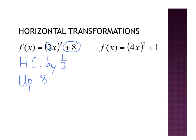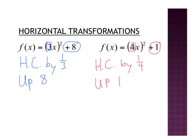In the next combo, I have a 4 inside — that's horizontal. Flipping it gives 1/4, so it's a horizontal compression by a factor of 1/4. Outside, I'm adding 1, which is vertical — up or down. Since I'm adding 1, I go up 1. Remember: for vertical transformations, think regular; for horizontal transformations, you have to think opposite.